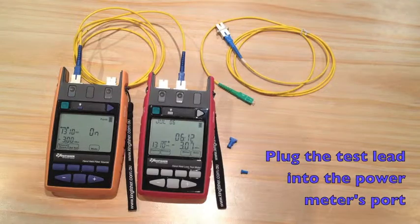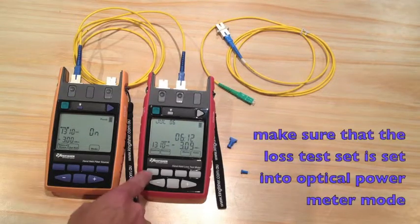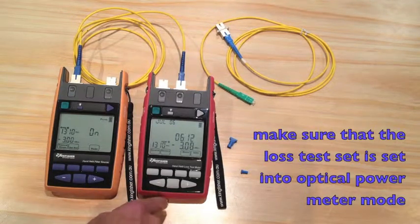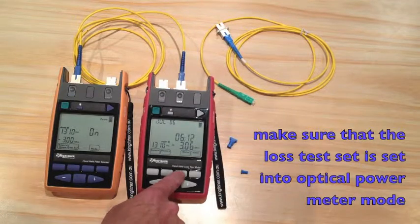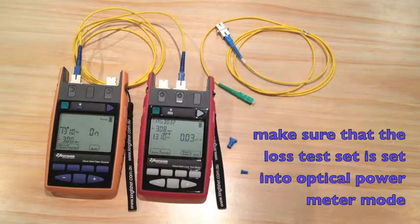Plug the test lead into the power meter port. Make sure that the loss test set is set into optical power meter mode.